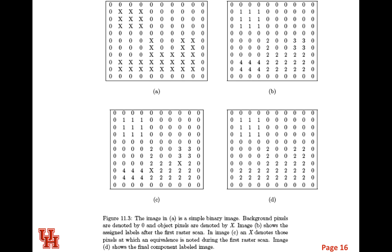The process described in the book is a two-step process which does two raster scans. A raster scan starts at the top left and, just like reading a book, you go left to right, then drop to the next line left to right, and so on. We iterate through our pixels until we find a pixel that is an object.